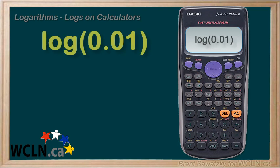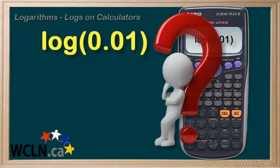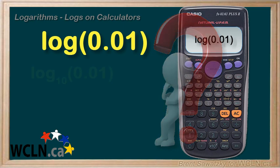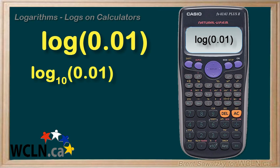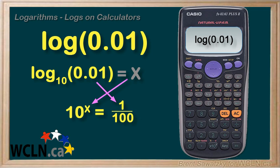Try another log of 0.01. Pause and give this one a try. The power that would cause a base 10 to be 0.01, well, 0.01 is the same as 1 over 100. So we need to push the 10 to the denominator. So we know it'll be a negative exponent. And we also know that 10 to the 2 is 100. So our answer must be negative 2.